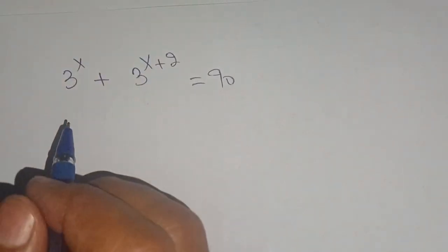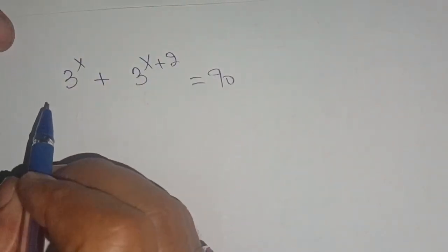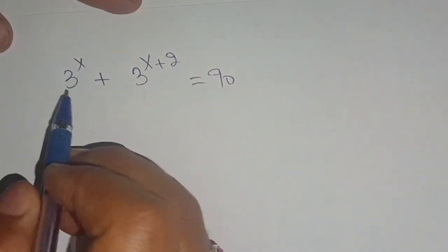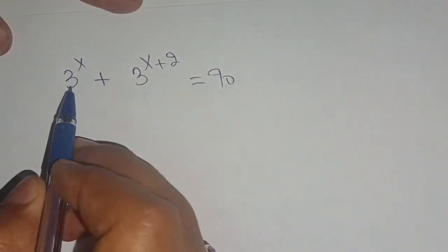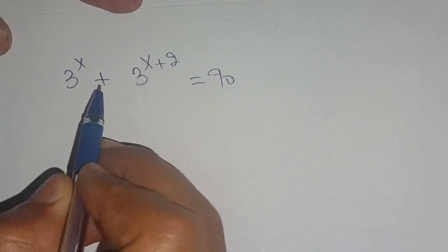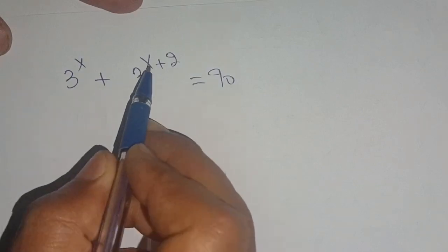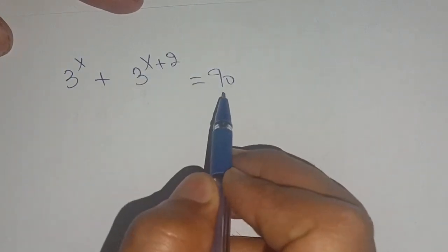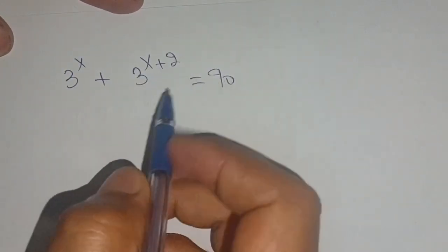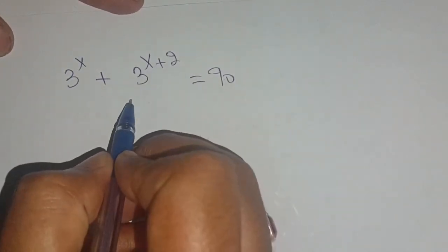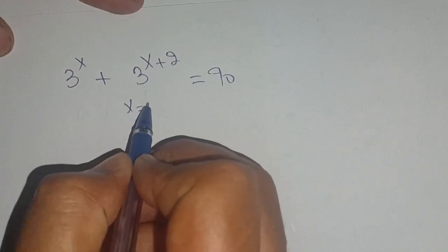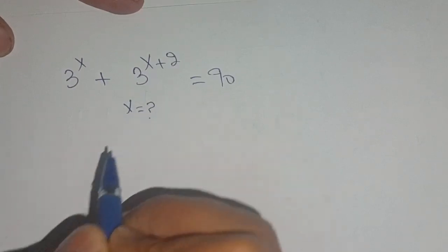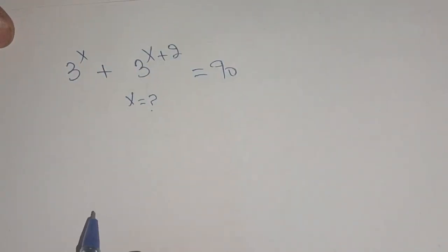Hello everyone, in today's video we are going to solve this exponential equation: 3 raised to power x plus 3 raised to power x plus 2 is equal to 90, and we have to find the value of x which satisfies this exponential equation.